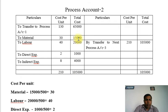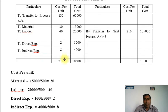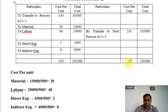The indirect expense for Process 2 is 4,000. So total cost per unit: 130 plus 31 plus 2 plus 8 equals approximately 210 rupees. Total cost = 210 × 500 = 1,05,000. We transfer to the next process — Process Account 3 — since there is no normal or abnormal wastage in this simple example. Transfer: 500 units at 210 rupees.